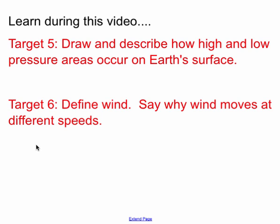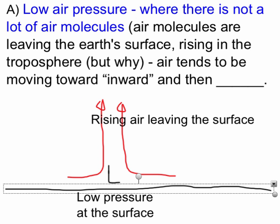And here's the new info. We're going to learn to draw and describe how high and low pressure areas occur on Earth's surface, and to define wind and say why wind moves at different speeds. Get your journal out. These would be great things to put in there. Let's start.